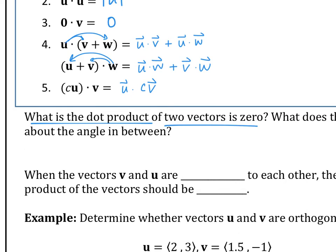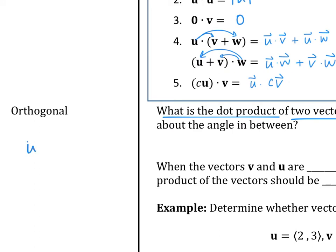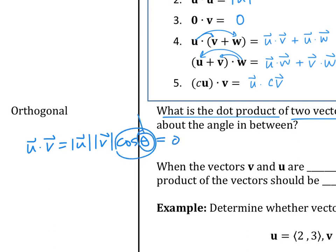If you have a dot product — u dot v — remember it equals magnitude of u times magnitude of v times cosine theta. Let's say that you do a dot product and the number is zero. What does that mean about the angle in between? 90 degrees. Because if this is zero, then the angle must be 90, because cosine 90 degrees is zero. That's the only way you're going to get zero. Likewise, if the angle in between is 90, then the dot product is zero.